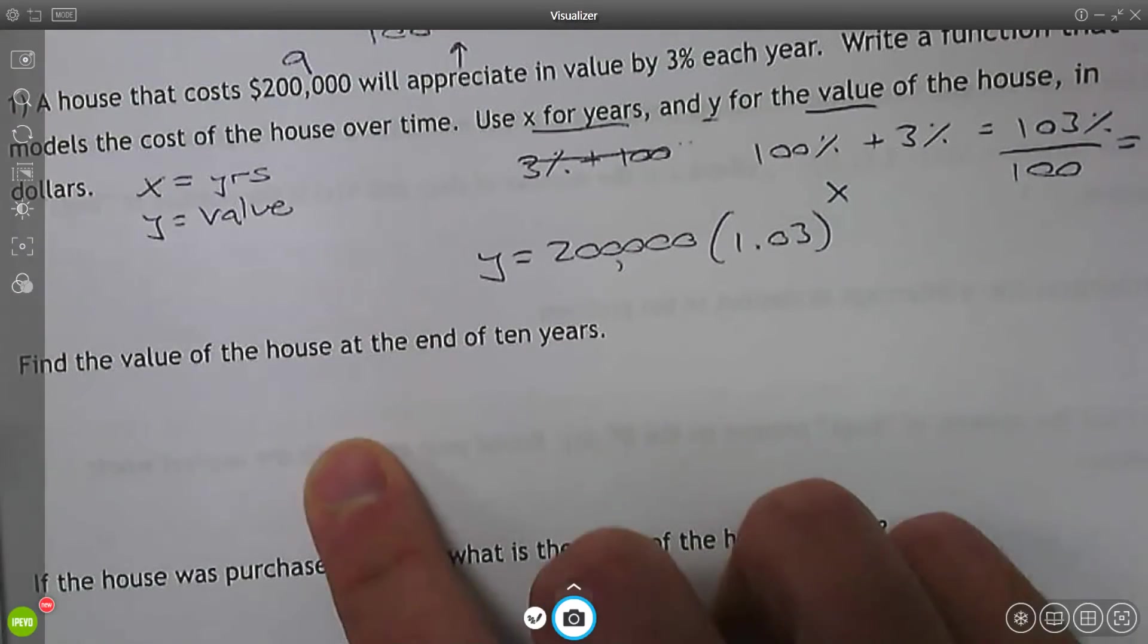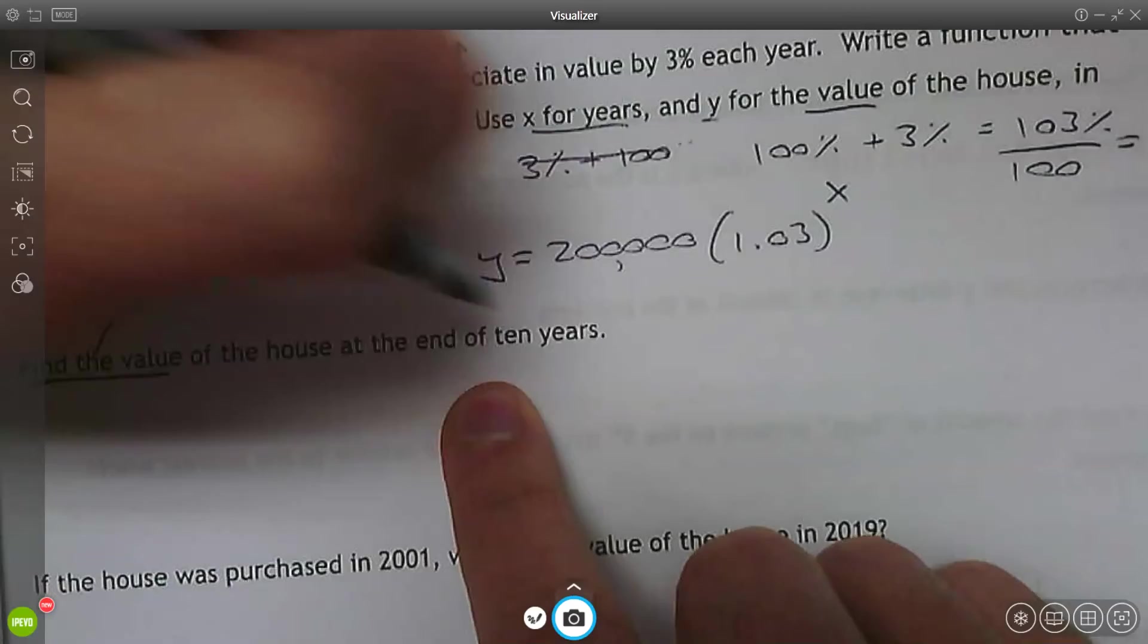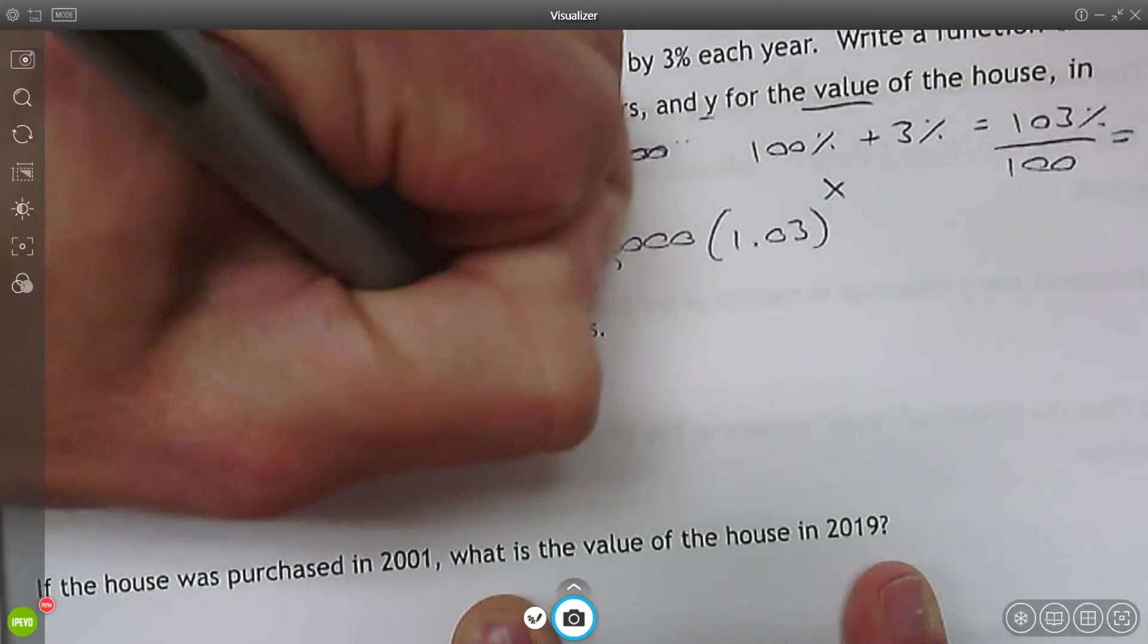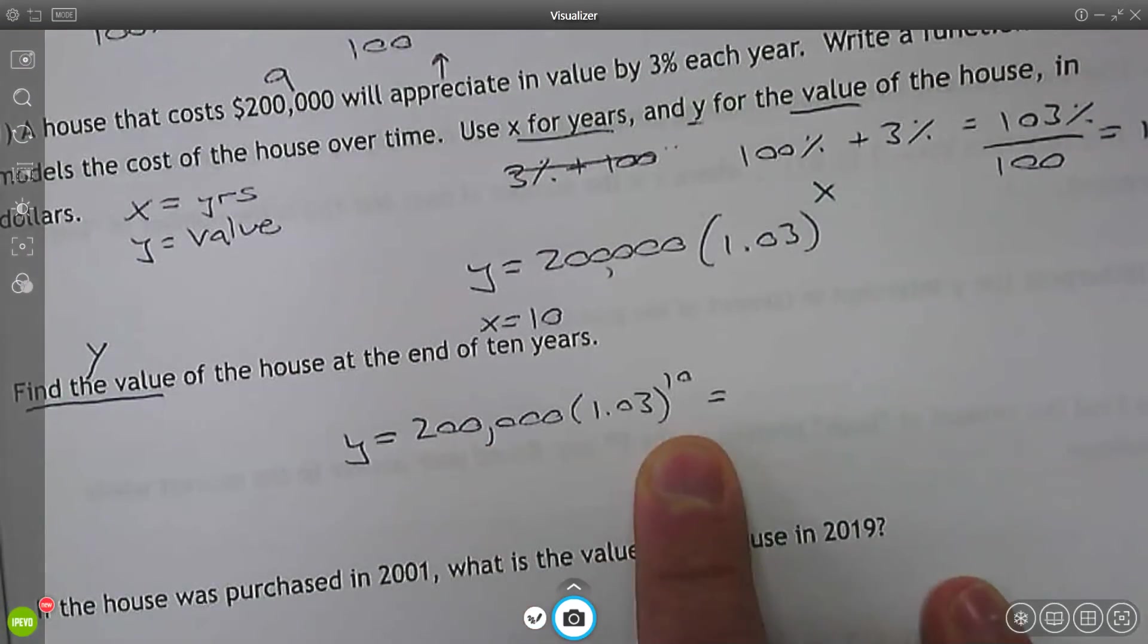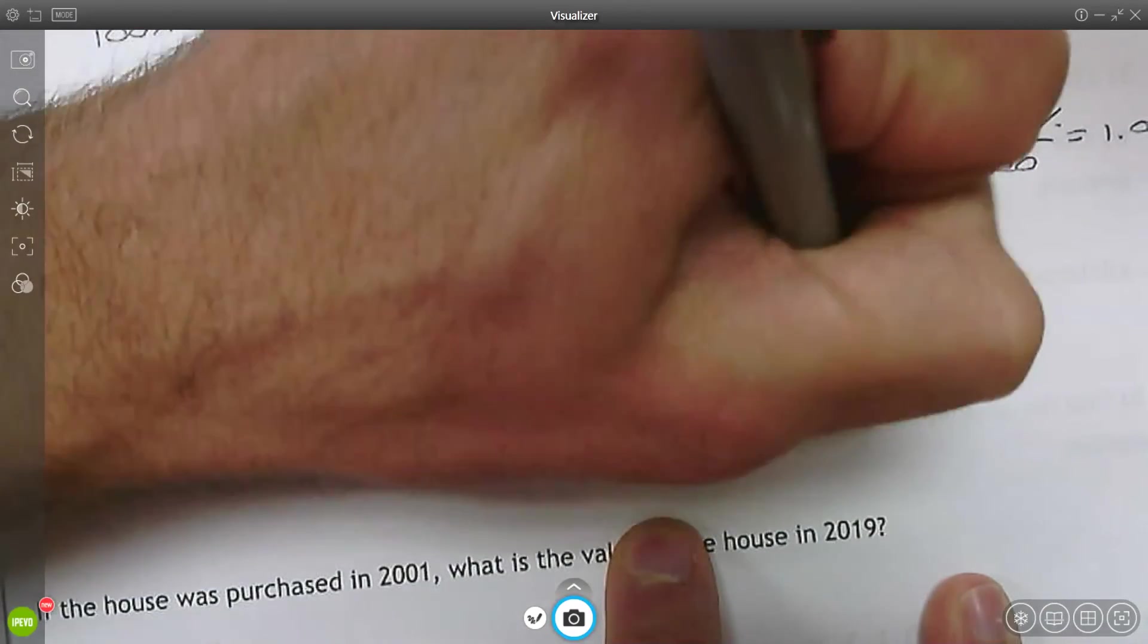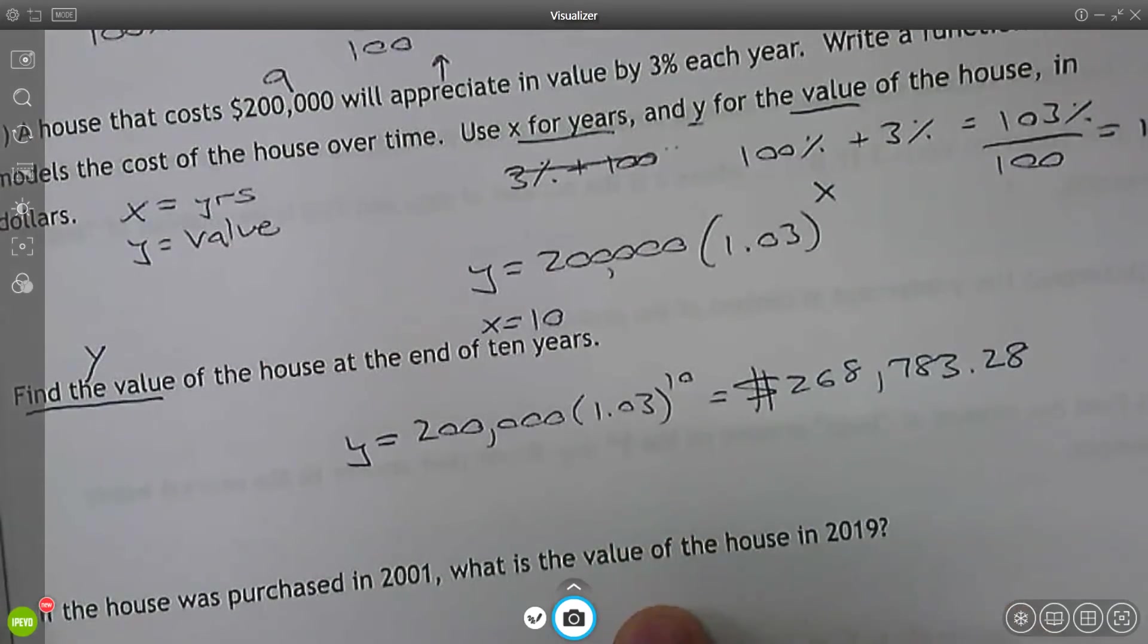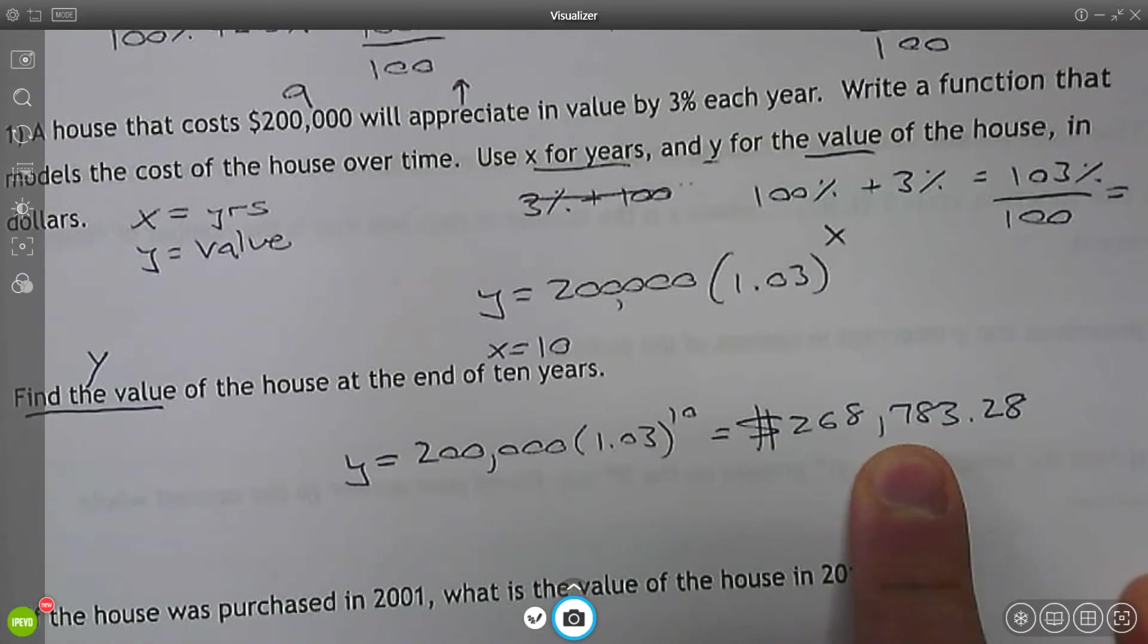Now, the second part of the question is find the value. If I'm finding a value, I'm trying to find Y after 10 years. 10 years means X is 10. So Y equals 200,000 times 1.03 to the 10th. And we would just plug this in our calculator using the little caret button. And it's going to give us $268,783.28. So over the 10 years, this house gained about $69,000 in value.